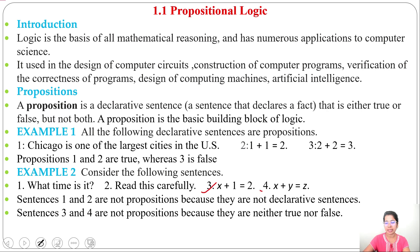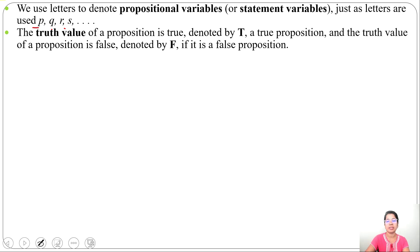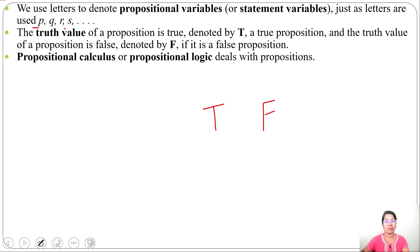We can denote propositions using letters called propositional variables or statement variables, like P, Q, R, S. You can take any alphabet. We can assign truth values like true or false. If the proposition is true, we assign true. If the proposition is false, we assign false.